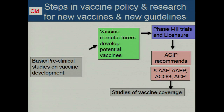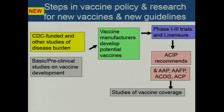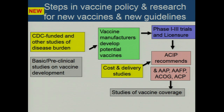Let me give you a simplified diagram of the steps in vaccine policy and research. The old way was: basic and preclinical studies led to vaccine development, manufacturers developed potential vaccines, launched phase one through three clinical trials leading to licensure, ACIP recommended vaccines and harmonized recommendations with AAP and others, and then there were studies of vaccine coverage. The new model adds studies of disease burden — to demonstrate whether the burden is large enough to warrant a new vaccine or guideline.